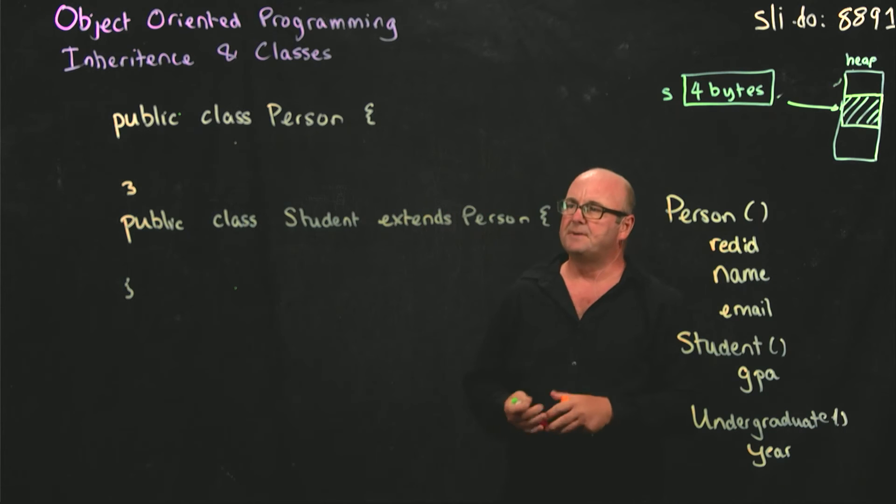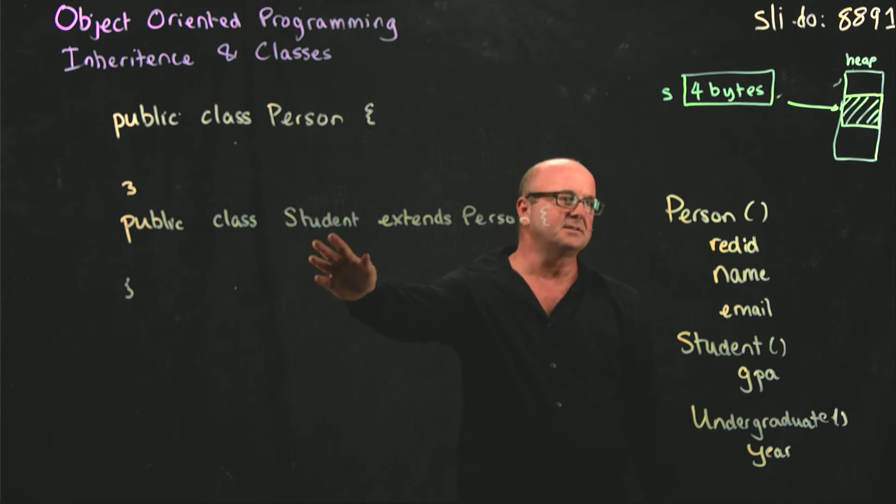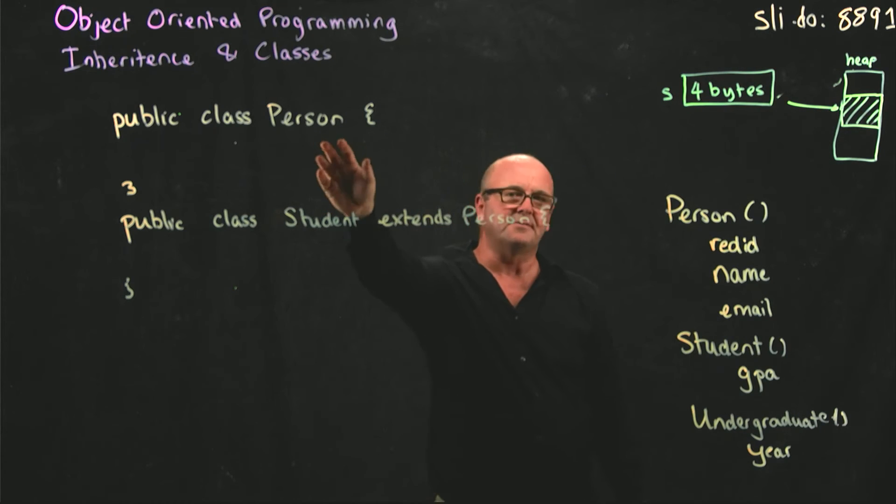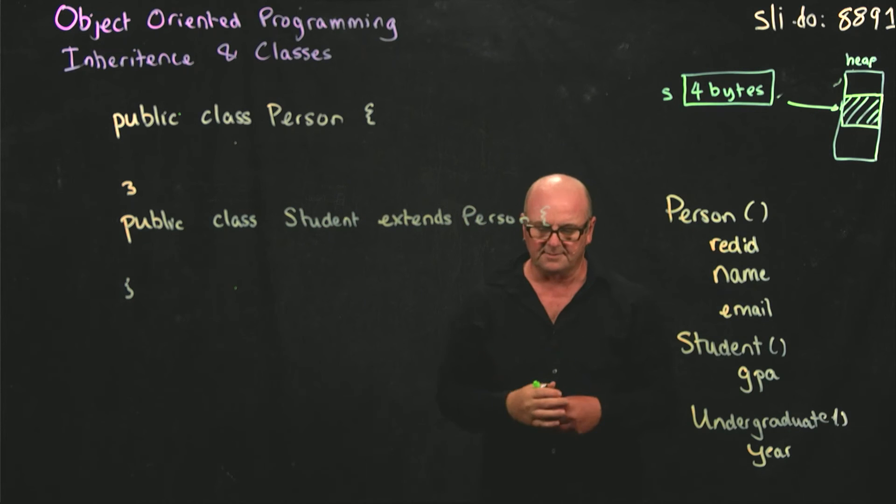And the way that we invoke inheritance in Java is we say that this extends person. So when we invoke the student class, the JVM says, oh, that's extending person. That means we can come up and grab everything that's in person and get all of those methods.